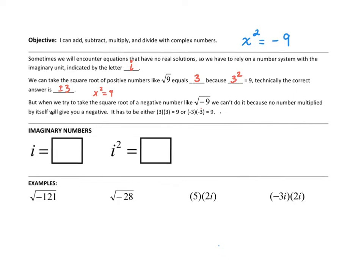But when we try to take the square root of negative numbers like negative 9, we can't do it because no number multiplied by itself will give you a negative. 3 times 3 is 9. Negative 3 times negative 3 is 9. No matter what, you always get a positive when you square something because two positives equal a positive, two negatives equal a positive. So they define this new number, this imaginary number i, to be the square root of negative 1.